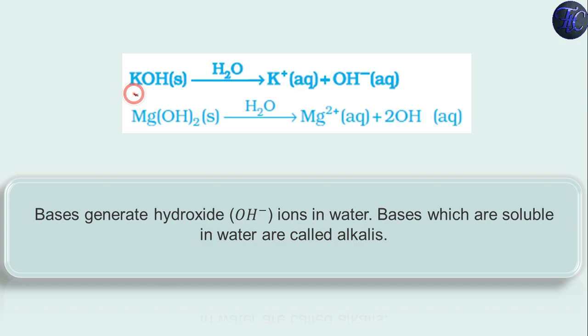It is clear that when a base is dissolved in water it produces hydroxide ions that is OH-. And it can occur in the case of potassium hydroxide and magnesium hydroxide also. If potassium hydroxide will be added in water it will produce K+ ion and OH- hydroxide ions. And same with magnesium hydroxide. It will produce Mg2+ and 2OH-. So bases generate hydroxide ions in water.